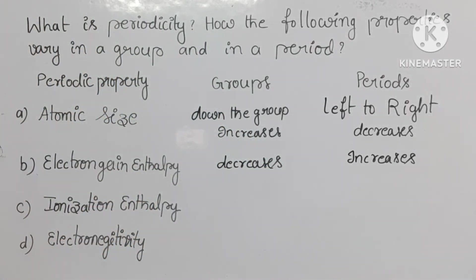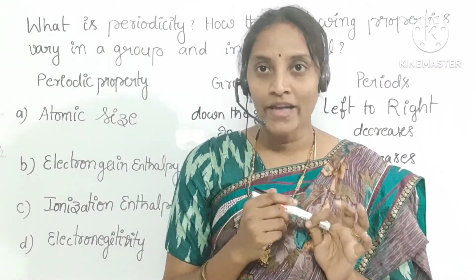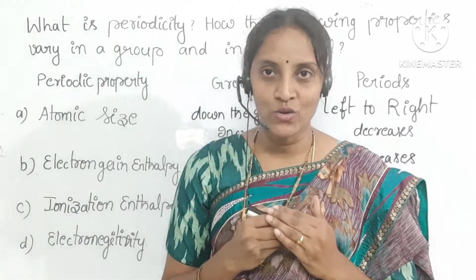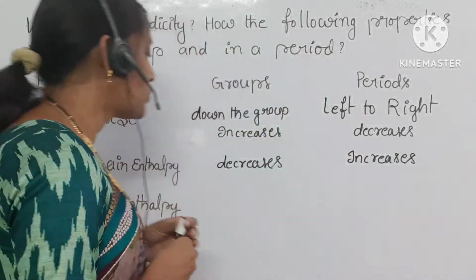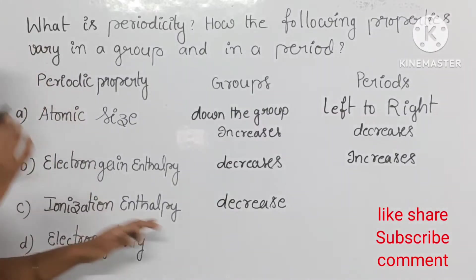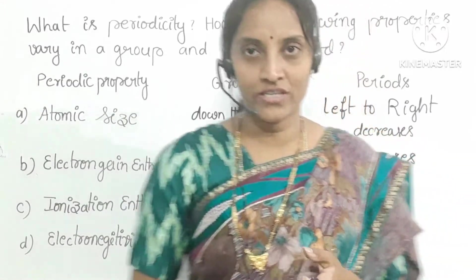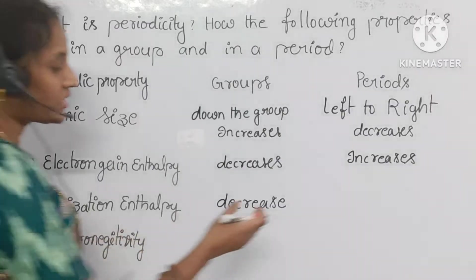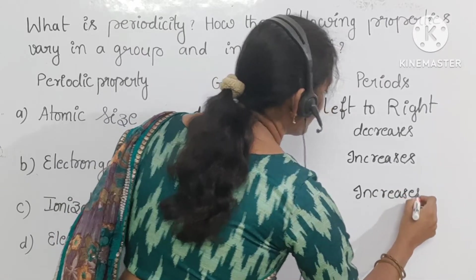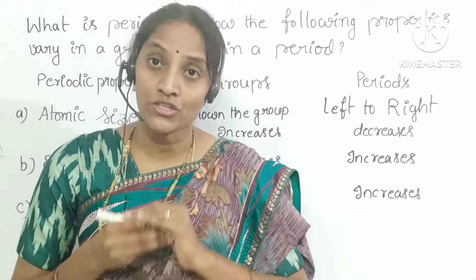Coming to ionization enthalpy — the energy required to remove one electron from the outermost shell of a gaseous atom. In groups, ionization enthalpy decreases down the group due to large atomic size and increase in screening effect. In periods, ionization enthalpy increases from left to right because of smaller atomic size and more force of attraction towards the outer shell.